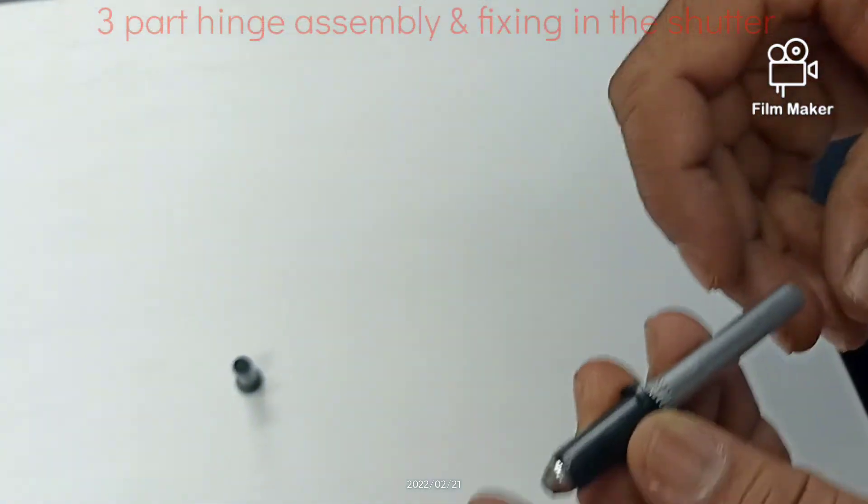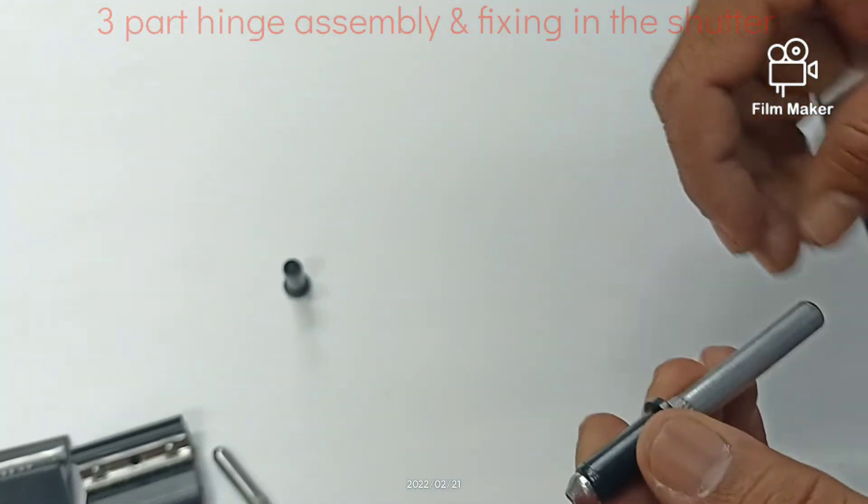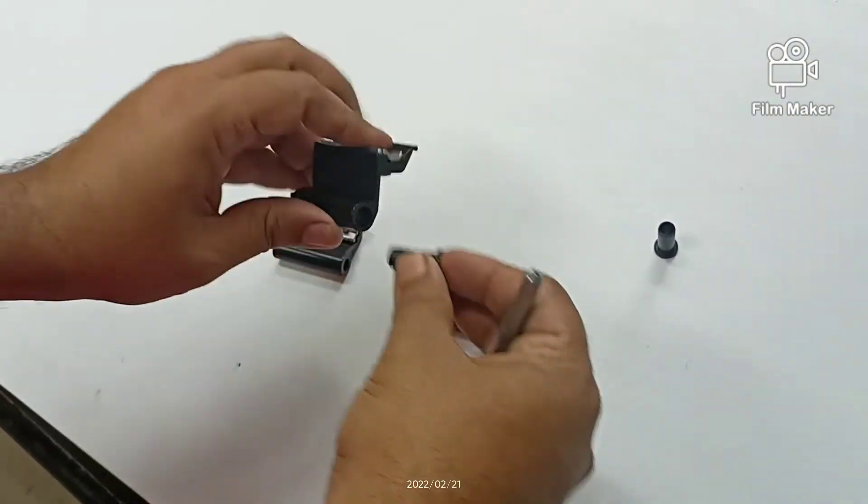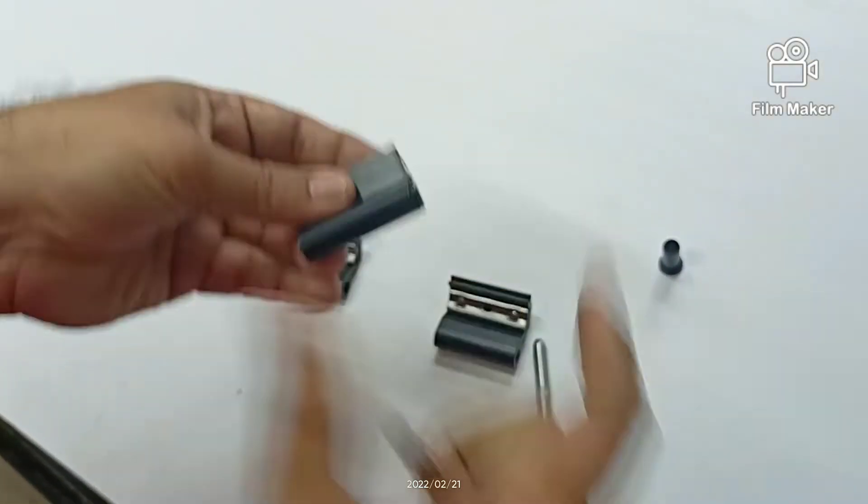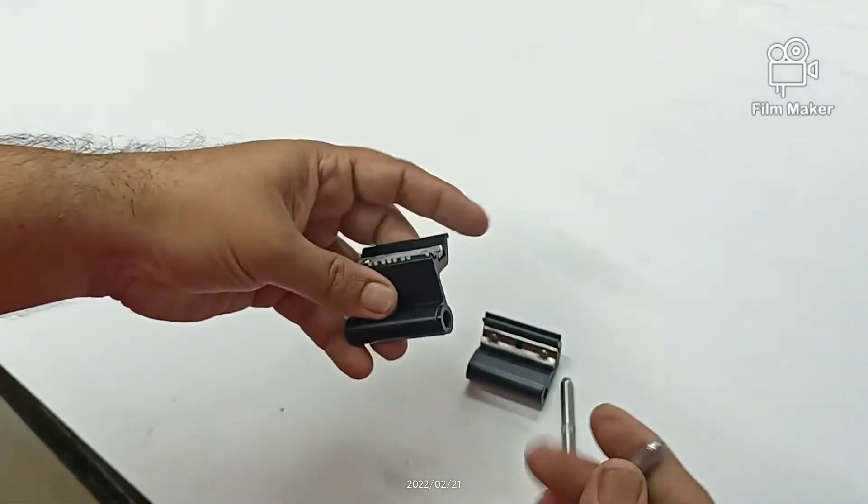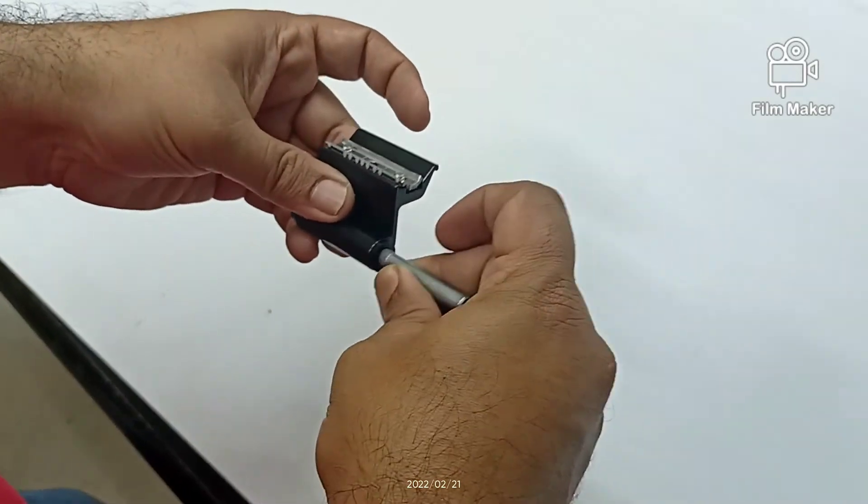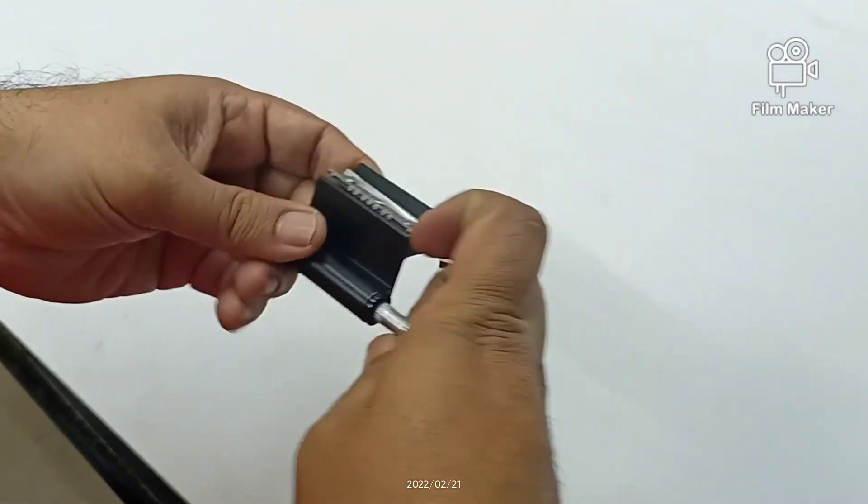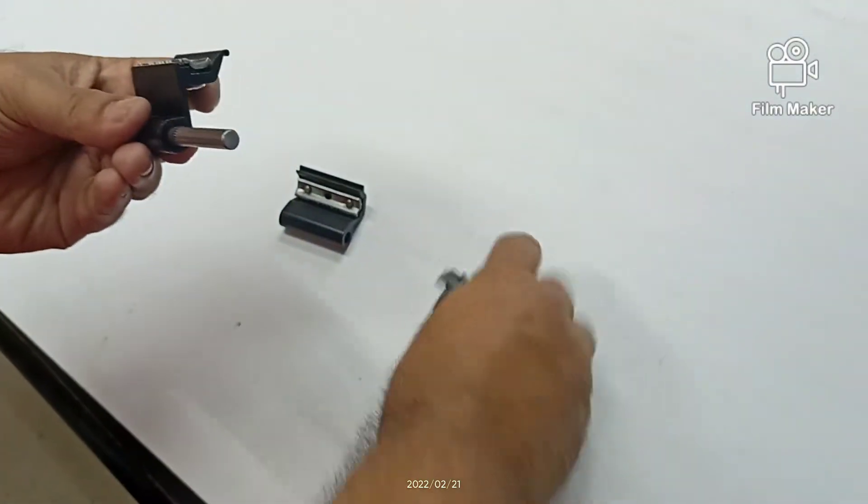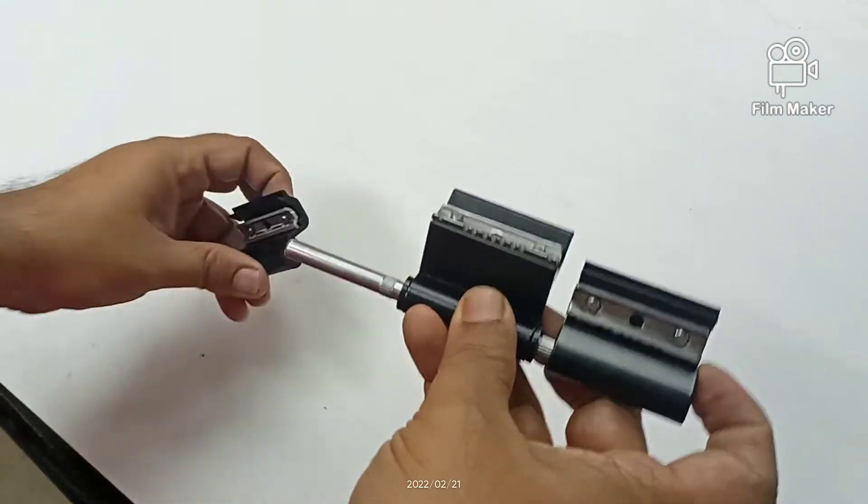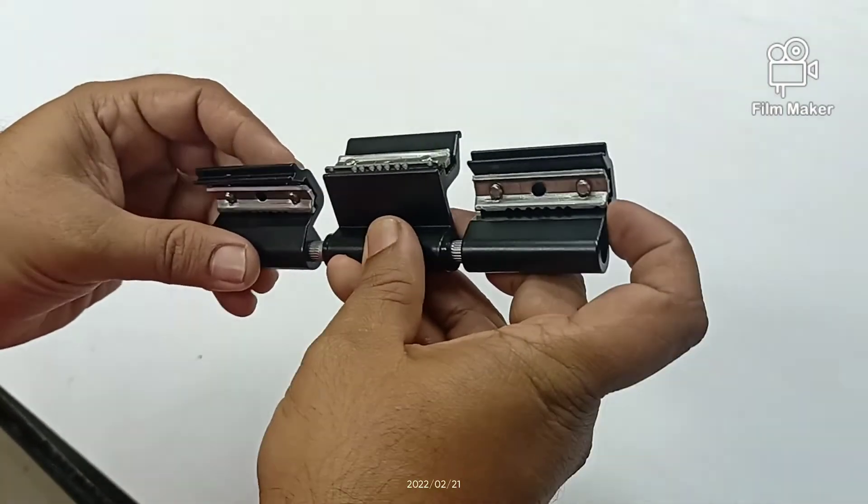You simply assemble like this. You have to apply the bush, one bush from here, the other bush from this side. And you have to put half from this side and half from this side. Now it's like this.